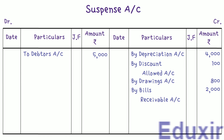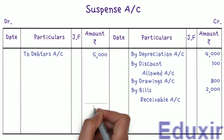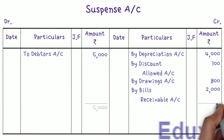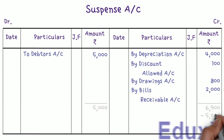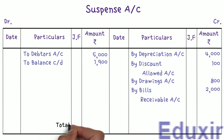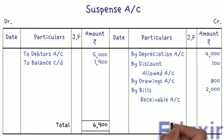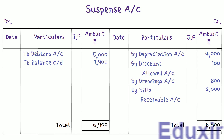Let us now find the totals on both sides of the Suspense Account. The total on the debit side is 5000 rupees. The total on the credit side is 6900 rupees. Subtracting 5000 from 6900 gives 1900 rupees. This is the credit balance and should be written on the debit side as 'To Balance Carried Down' — 1900 rupees. Now both sides total 6900 rupees and the Suspense Account is balanced. This balance carried down is the difference in the trial balance — 1900 rupees is the excess credit. With that, we have come to the end of this solution.